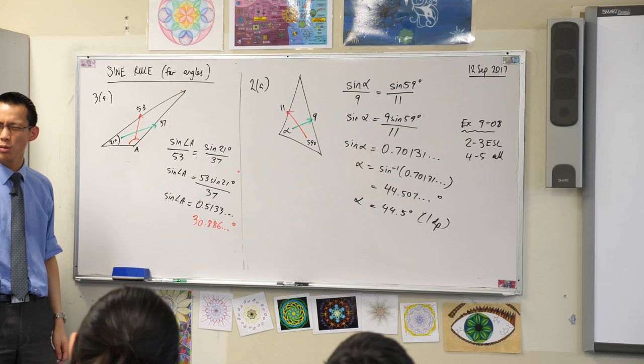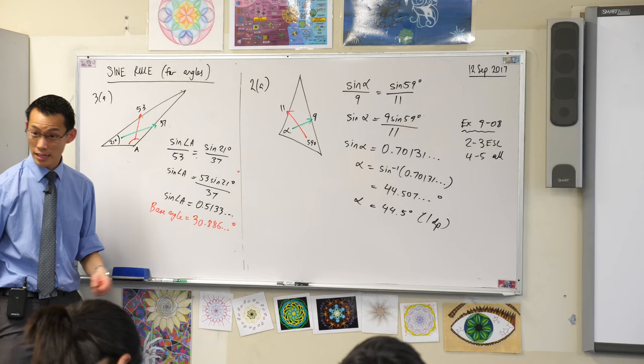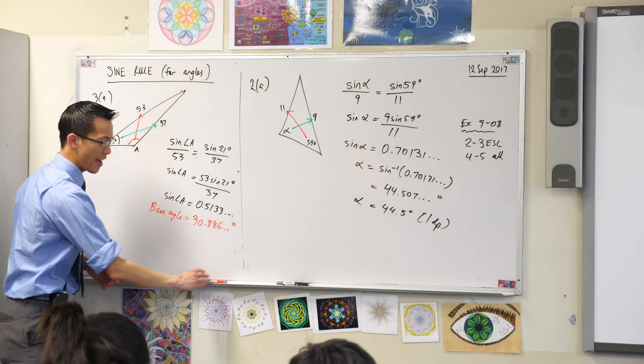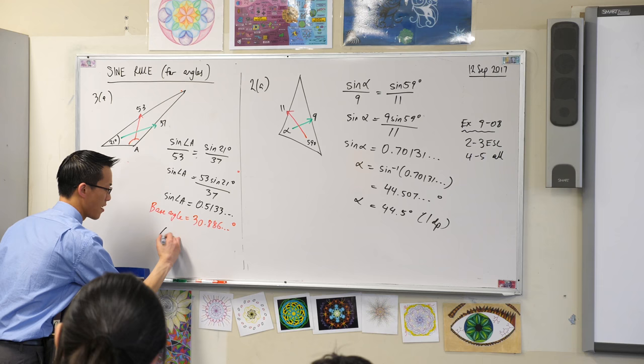So what could it be instead? This is actually, thinking back to our review questions, this is the base angle. It's not A, it's the angle that's related to A. A looks obtuse, right? In fact, if you look at the top of question three in the text, it says angle A is obtuse. So therefore, to get the obtuse version of this, I'm going to do 180 take away.